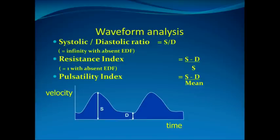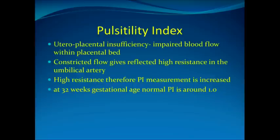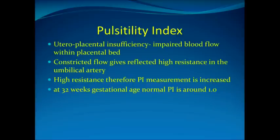In most literature and most departments, it is the pulsatility index that the obstetrician wishes you to report. The pulsatility index varies when there is impairment of blood flow within the placental bed. If you have uteroplacental insufficiency, you get impaired blood flow, and this constricted flow gives a reflected high resistance in the umbilical artery — so the PI measurement is increased. A high pulsatility index indicates resistance, and the placenta is not the free-flowing organ that it should be.